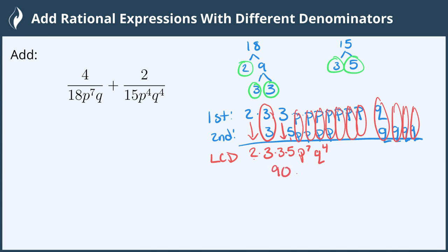me 90 p to the 7th q to the 4th. So the lowest common denominator is 90 p to the 7th q to the 4th.